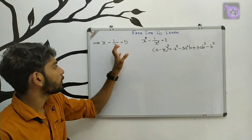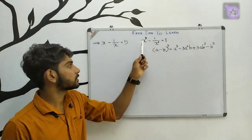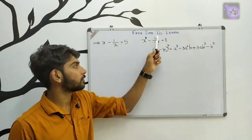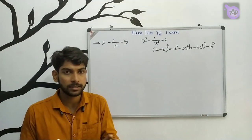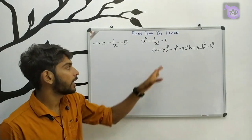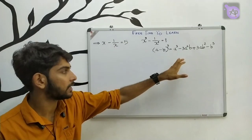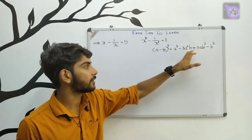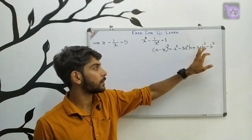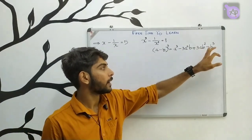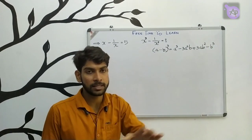Next question: x minus 1 by x equals 5, find x cube minus 1 by x cube. We use: a minus b whole cube equals a cube minus 3a squared b plus 3ab squared minus b cube.